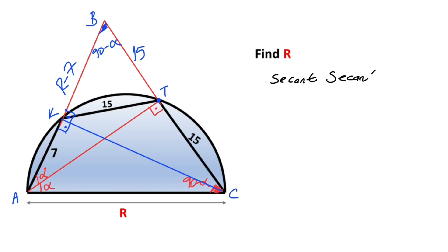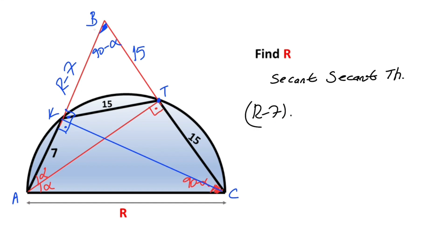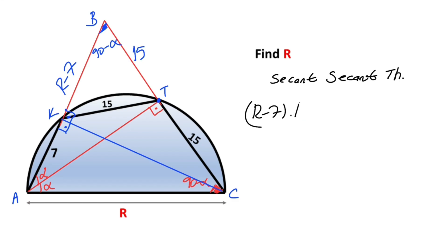Now we can apply the secant-secant theorem. According to this theorem: (r minus 7) times r must equal 15 times 30. Distributing gives r squared minus 7r equals 450.